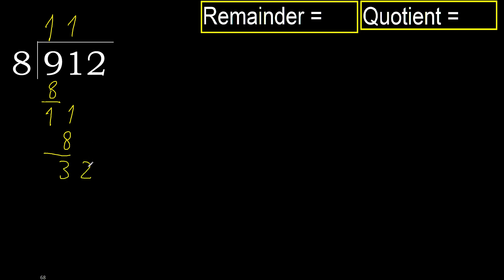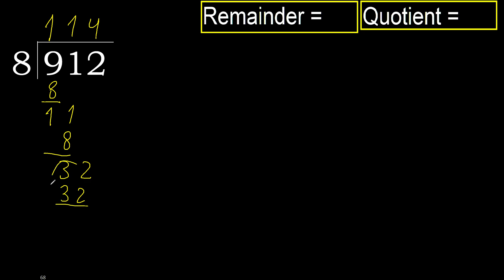Next: bring down to get 32. 8 multiplied by 4 is 32 — not greater. Subtract.